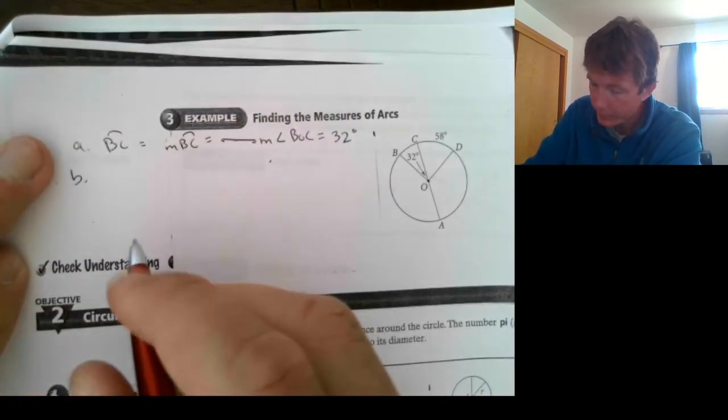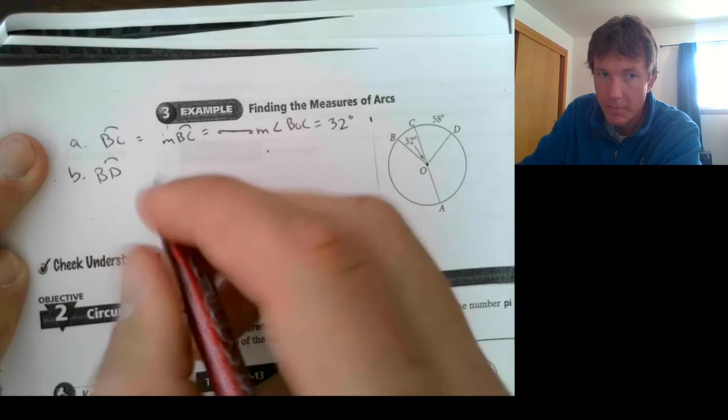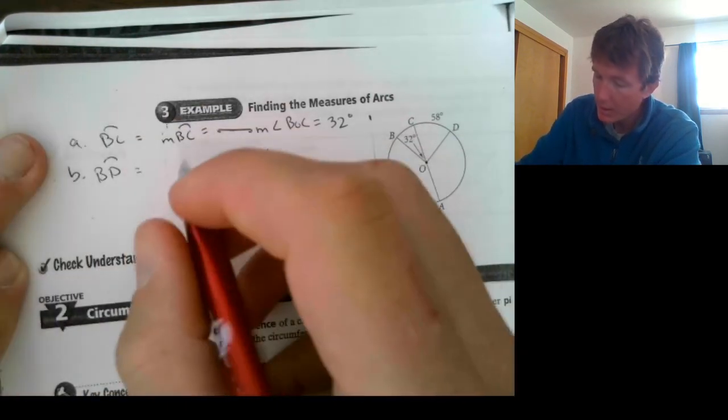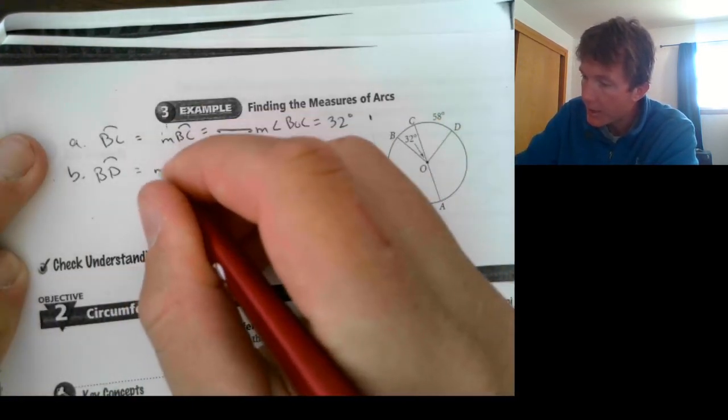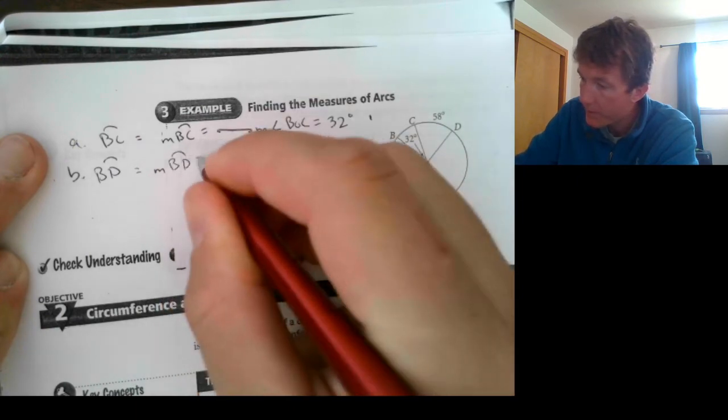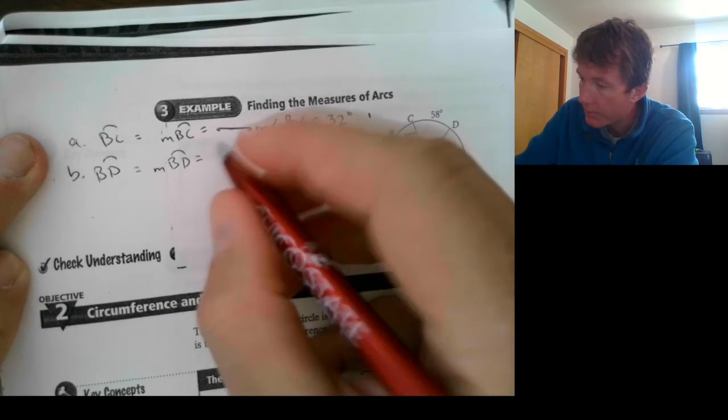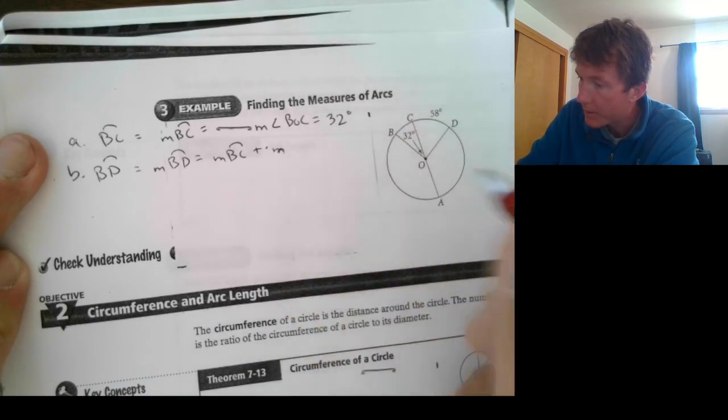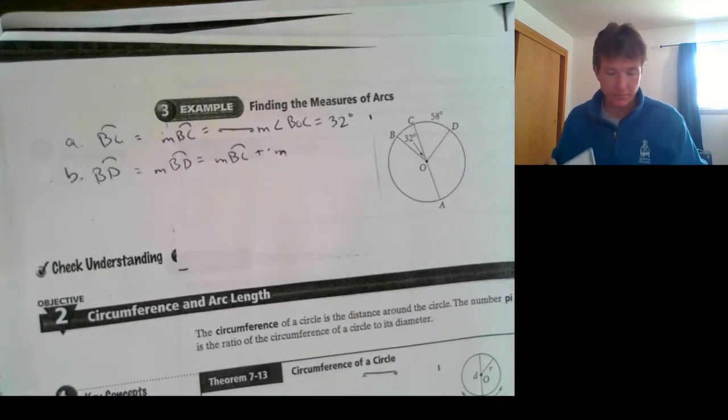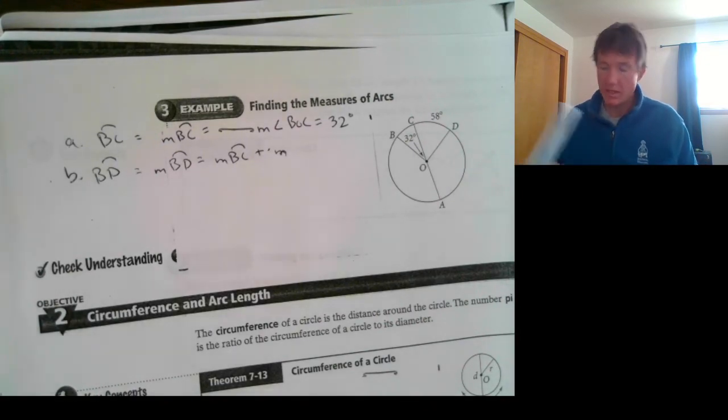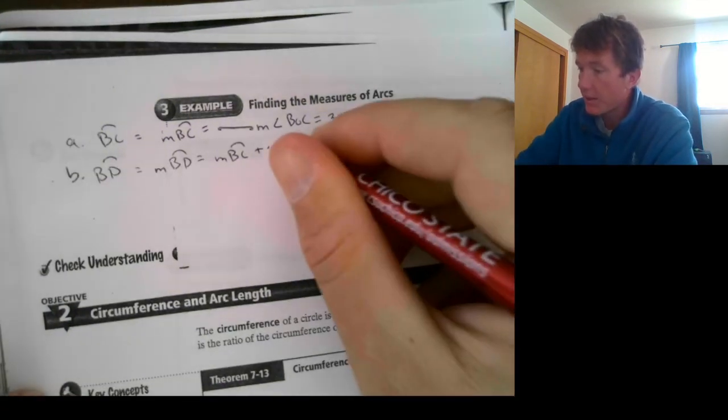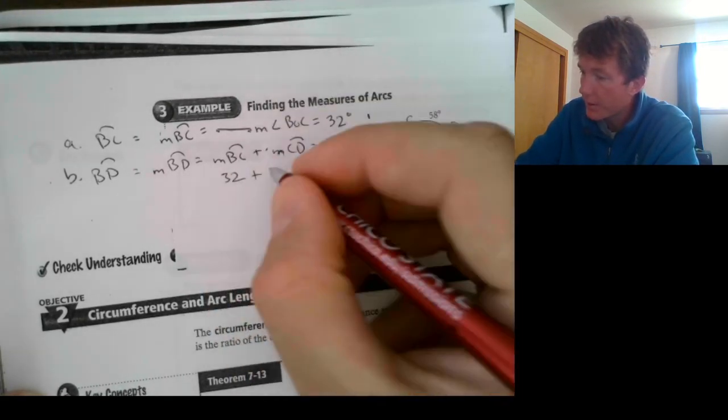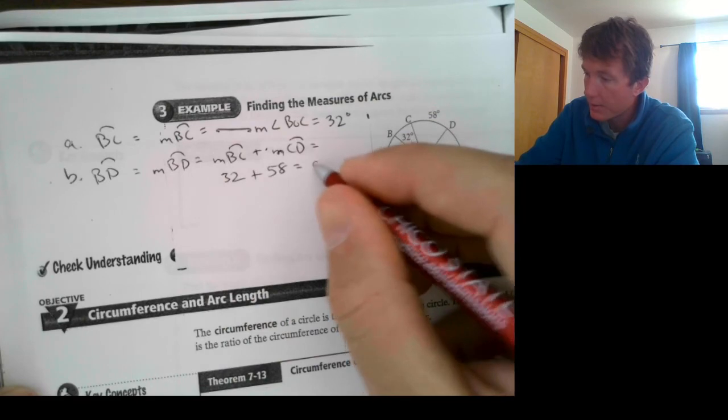Okay, next one. BD. BD is from here, B to D. And we need to add these together. We're going to add two angles together to get that one. That's going to be the measure of BC, plus the measure of CD. So, we're going to use the arc, the, what do we call it, adjacent arcs. The arc addition postulate. So, we're going to add these two together. So, we're going to add together 32, which is here, plus 58. And together, those equal 90 degrees.